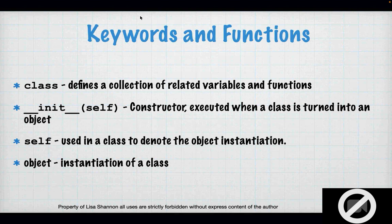So what we're getting here today, when we talk about object-oriented programming, is the ability to take everything we've done and put it into something and name it. We can put functions into this thing we can name. We can put variables into this thing we can name. And then we can use that thing over and over and over again. So let's get into it.